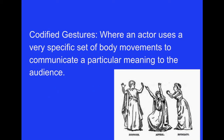Codified gestures are where an actor uses a specific set of body movements to communicate a particular meaning to an audience. For example, looking at the picture, you can see three people with big gestures. The first is surprise — arms thrown out wide to the sides. The second is appeal — down on their knees with hands up toward the sky or toward the person they're appealing to. These are very big, deliberate gestures. That's what a codified gesture is.